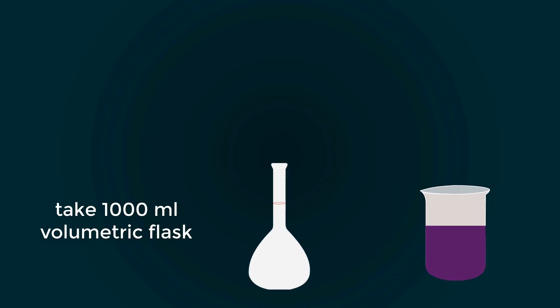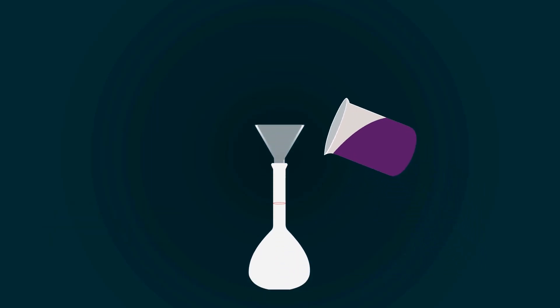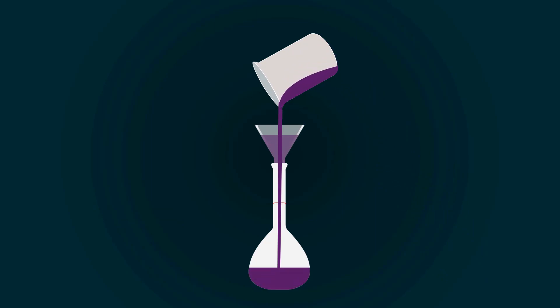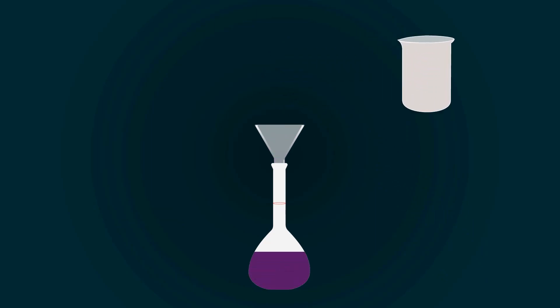Now pour all the solution into the volumetric flask with the help of the funnel. You have to fill the volumetric flask up to the 1000 milliliter mark. For that, you have to add more distilled water.